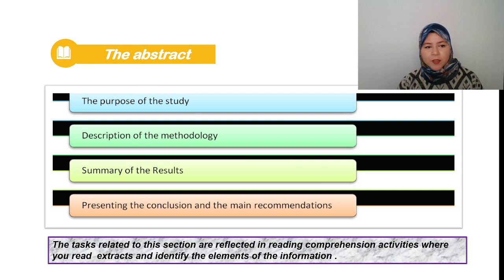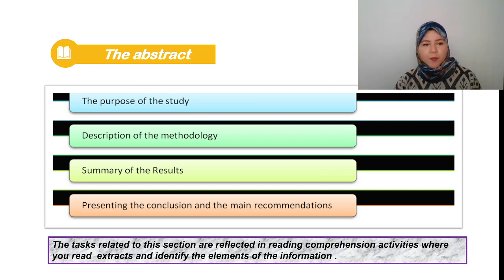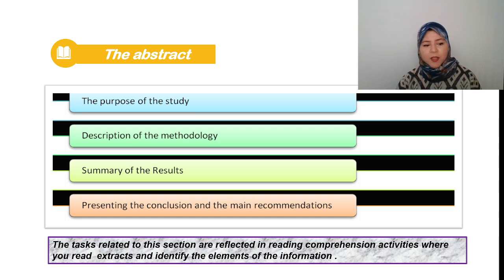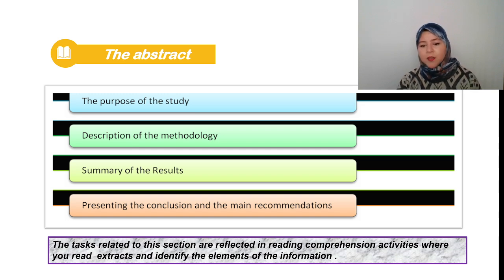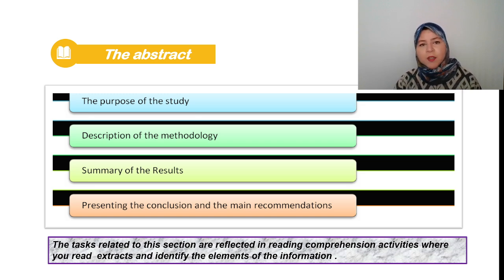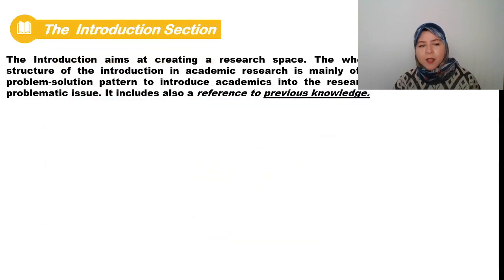When reading the abstract you focus on four main steps: the purpose of the study, description of the methodology, summary of the results, and presenting the conclusion with the main recommendations. The tasks related to this section are reflected in reading comprehension activities where you read extracts and identify the elements of the information.